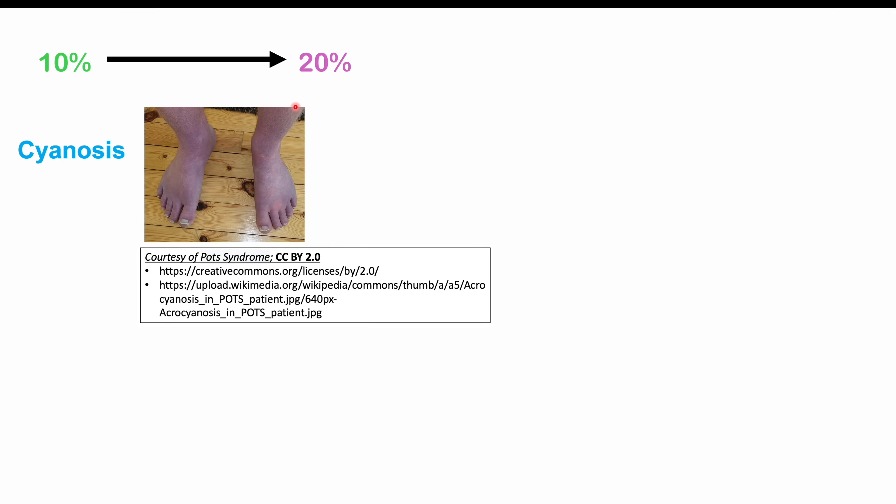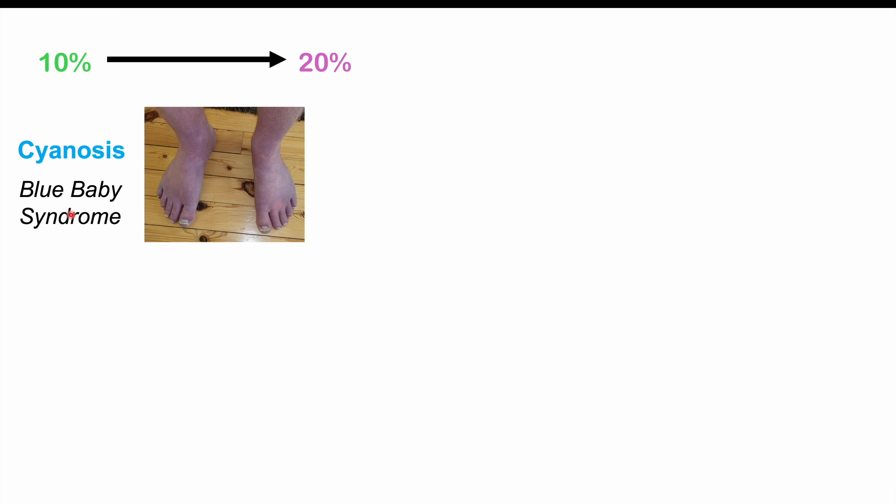It's normal to have about 1–3% methemoglobin, but beyond that we have the condition methemoglobinemia. Healthy patients generally will not have signs and symptoms until they reach about 10% methemoglobin. Between 10% and 20%, we can see cyanosis occurring — this can account for blue baby syndrome, where young children exposed to contaminated well water or certain medications can become blue.